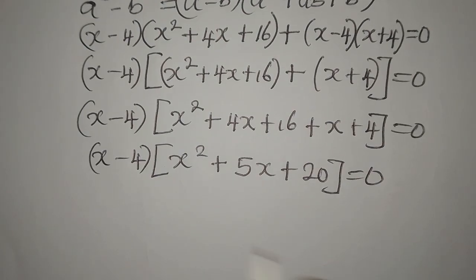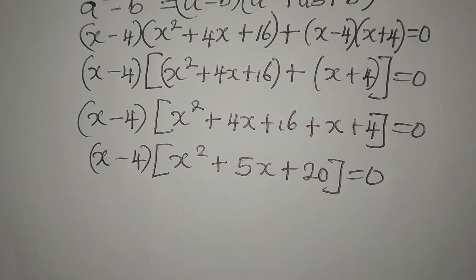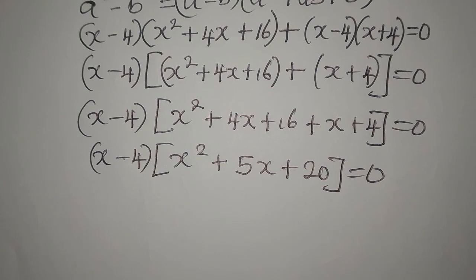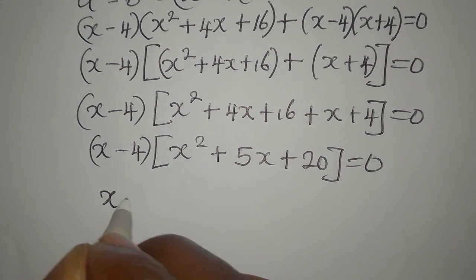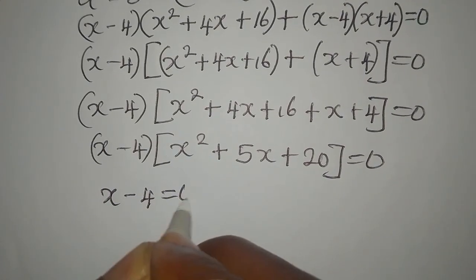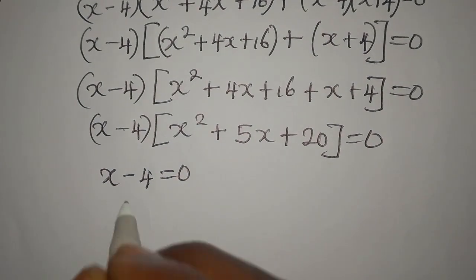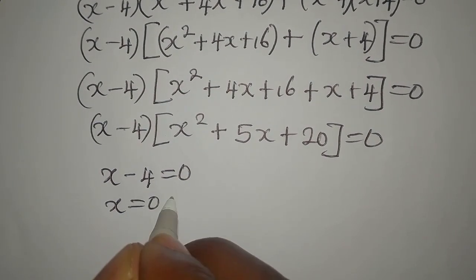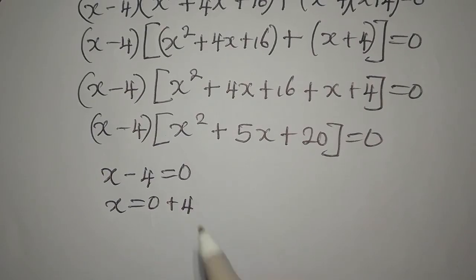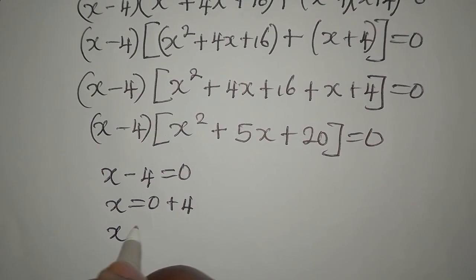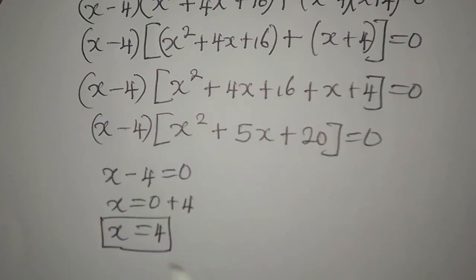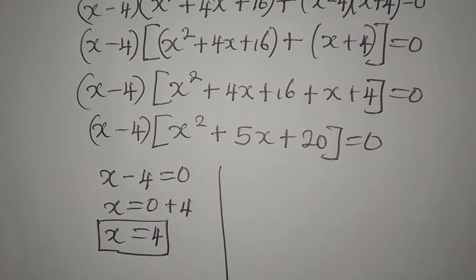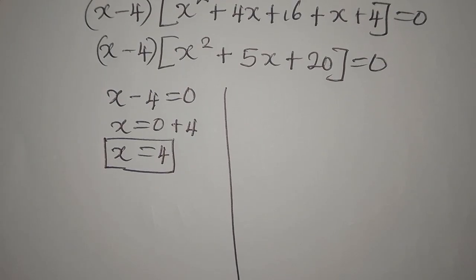When we multiply these two we get zero, so one of them must be equal to zero. Let's say x minus 4 equals zero first, so our x will be zero plus four, meaning x equals 4. This is one of the solutions.